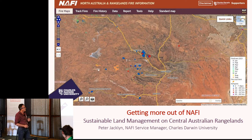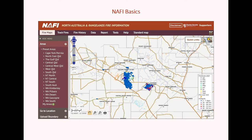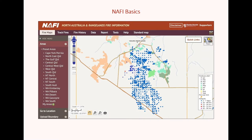This is NAFI — North Australia and Rangelands Fire Information. We added the rangelands when we started covering most of the rangelands. This is the website and the basic map you get. What NAFI does is show fire activity — these hotspots are detected by satellite. They show where a bright spot, which is usually a fire, has been detected. If you zoom in on NAFI, it's a dynamic map, and you'll also see these coloured patches which are burnt areas.